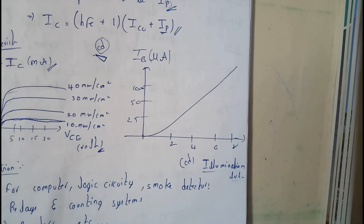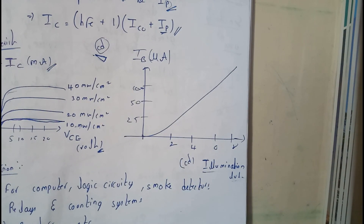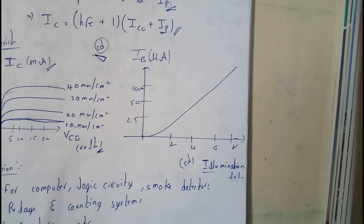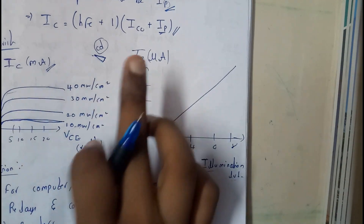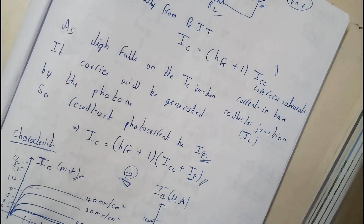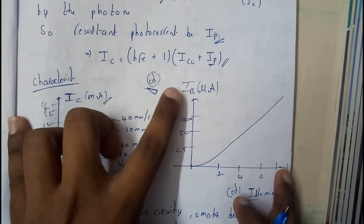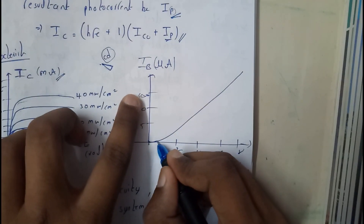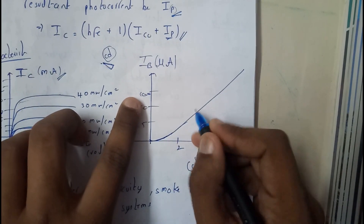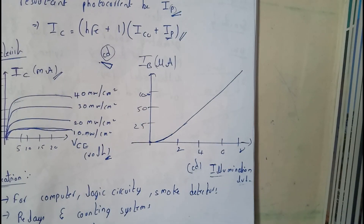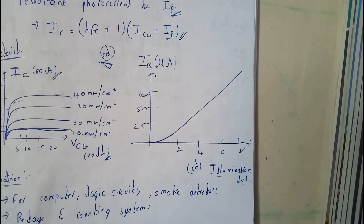The second characteristic is illumination level (candela) versus base current IB. Starting slightly and then becoming linear, as you increase the illumination or light intensity, IB also increases linearly.